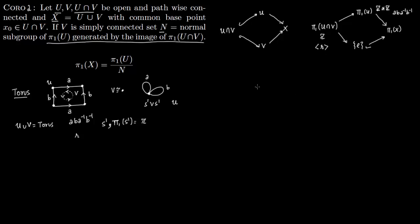So the fundamental group of the torus is the free group on a and b — that is ℤ*ℤ generated by a and b — with the relation r embeds as aba⁻¹b⁻¹ = identity, because once you start and go all the way around you come back to the same point.